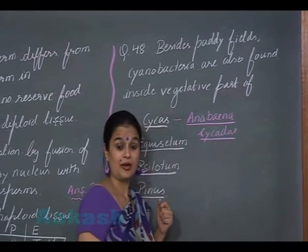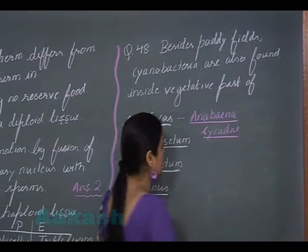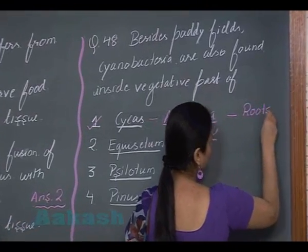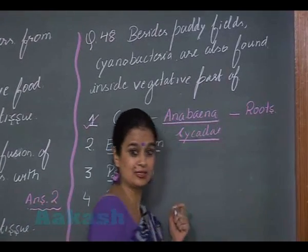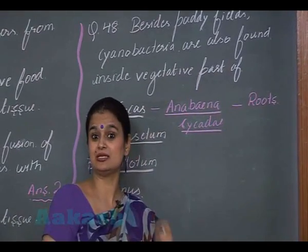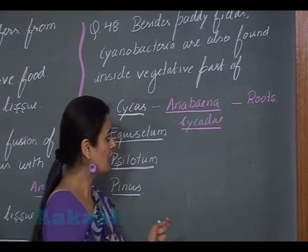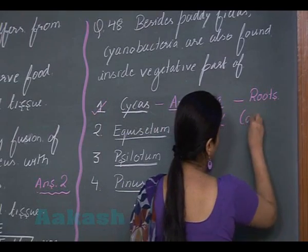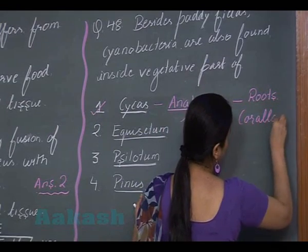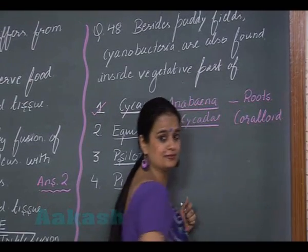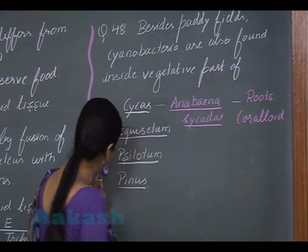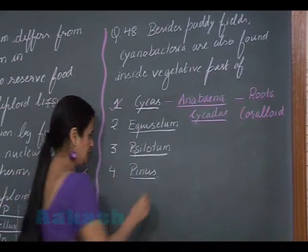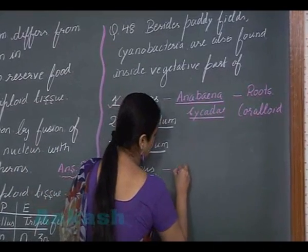Anabaena cycadae is associated with the roots of Cycas. This is the vegetative part which contains the Anabaena association. The roots that contain this Anabaena association are known as coralloid roots.